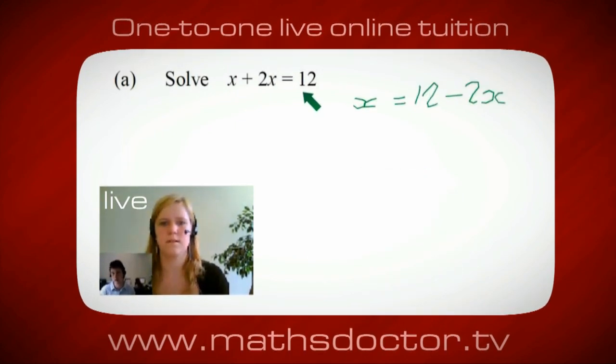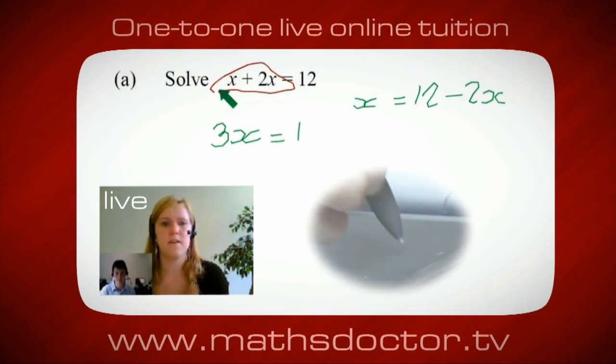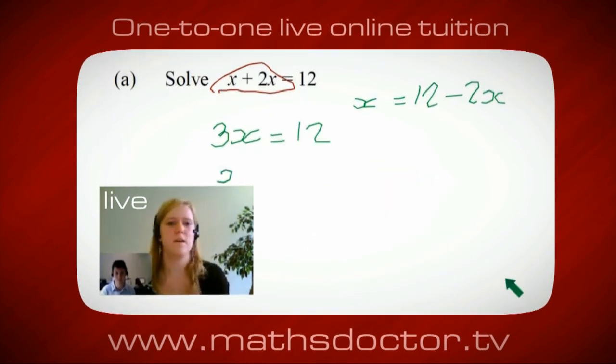Okay, so a lot of the time we want to get x by itself, but what we want to do first is get all of these x's together. So can you see anything we can do with this? Get all these together in one place. Okay, it's 3x, isn't it? Yeah, absolutely. So 3x equals 12. Oh, and so x equals 4. Brilliant. Spot on. Well done.